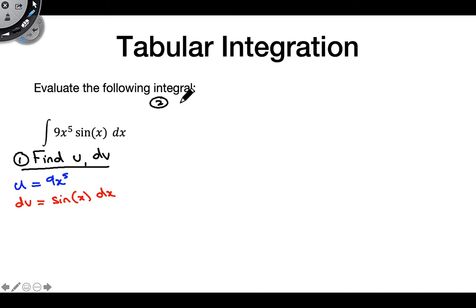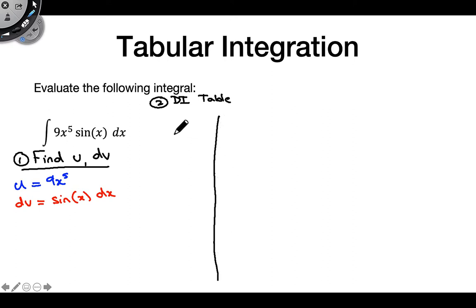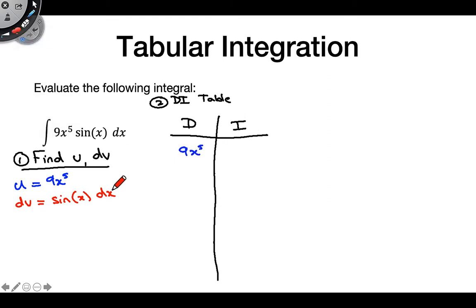The second step is to put this all in what's called a DI table. This is why you might have also heard of tabular integration being called the DI method — it's the same thing. We create this table with one column called D and another called I. In the D column, we put the thing we want to differentiate — in this case, our u, which is 9x to the fifth. In the I column, we put whatever we want to integrate — that's dv, which is sine of x.